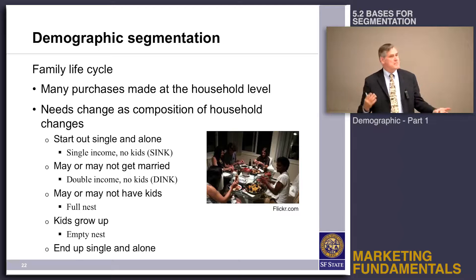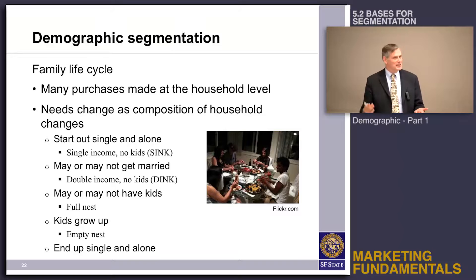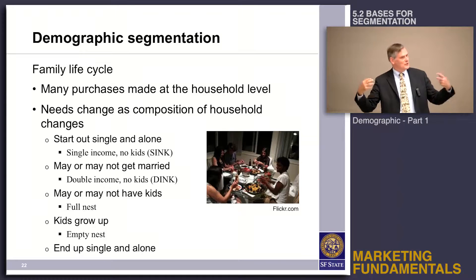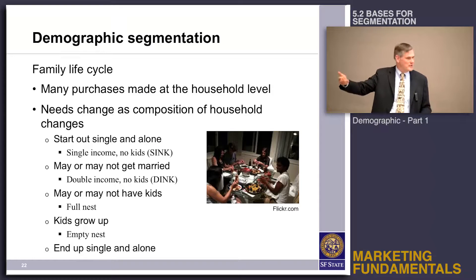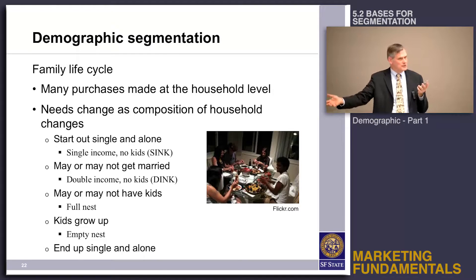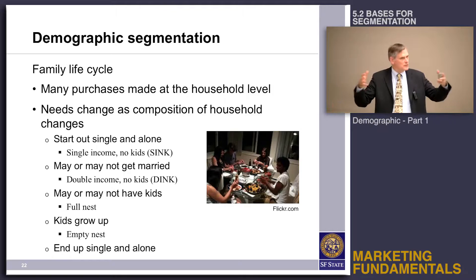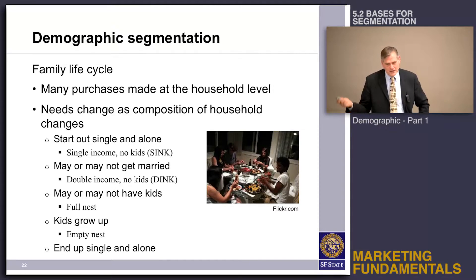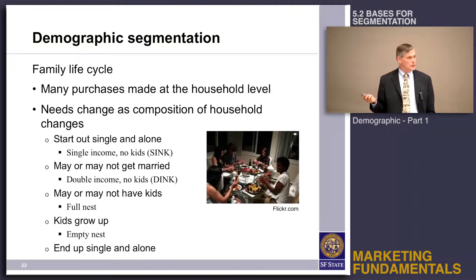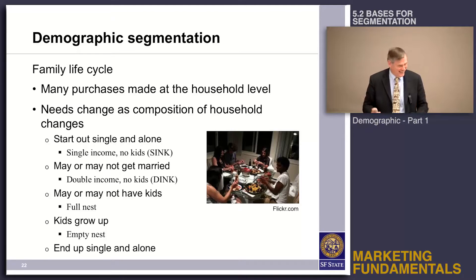Then we may or may not get married and become DINKs — Double Income, No Kids — or Double Income with Kids. If we have kids, we're a full nest, and then maybe the kids grow up and we become an empty nest. We may or may not get divorced. If we have kids, we have different consumption needs, and if we're living as a couple, we have different consumption needs than if we're living single. And then the most depressing part is we end up single and alone, right where we started, and then we die.